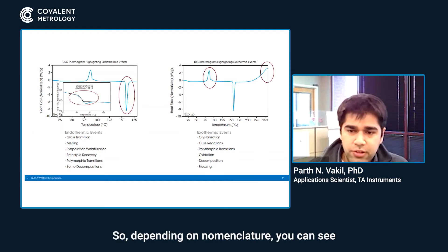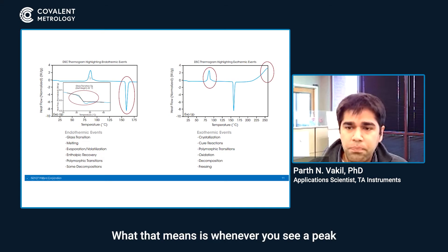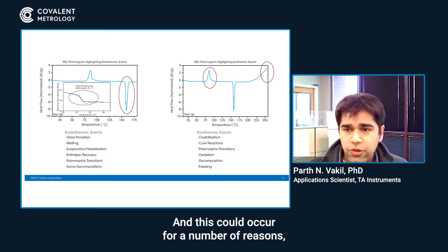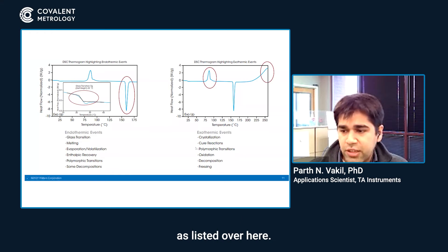Depending on nomenclature, we have exotherms facing upwards. This means that whenever you see a peak pointing upwards, the sample is releasing heat. This could occur for a number of reasons.